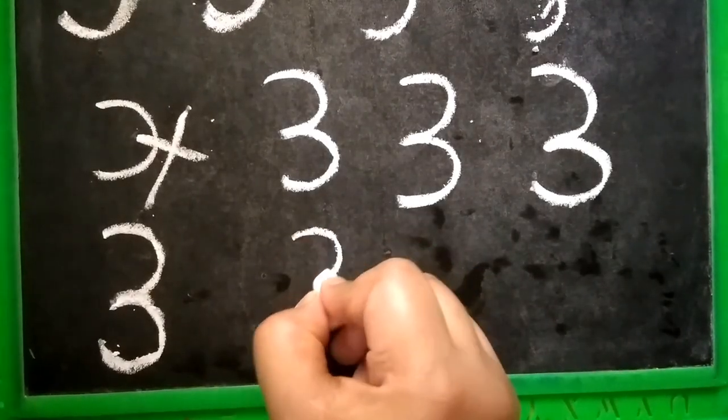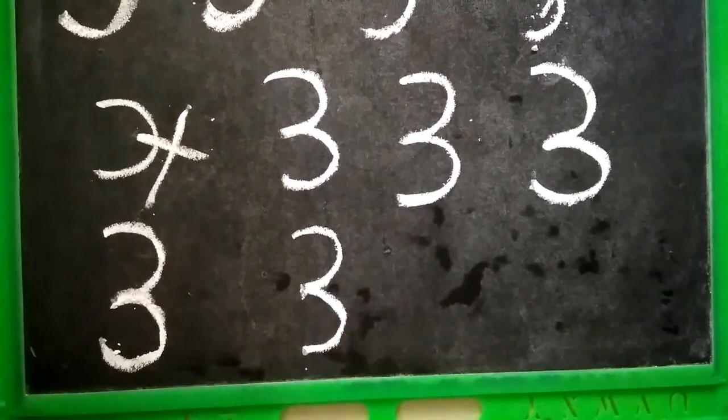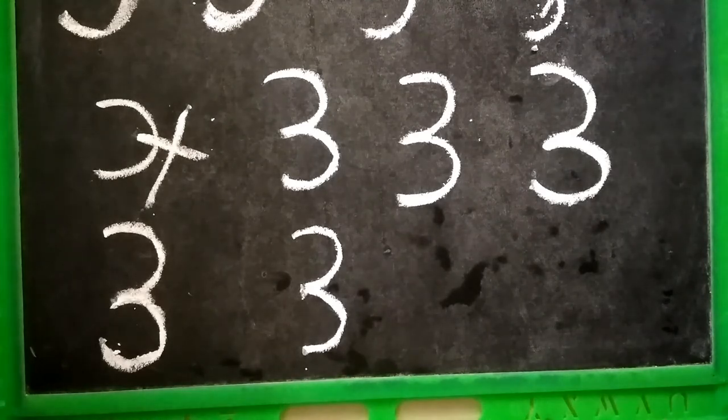Again, 1 curve forward, 2 curve forward is number 3. So children, this is how we write number 3 with the help of curve forward.